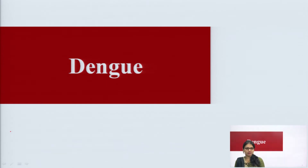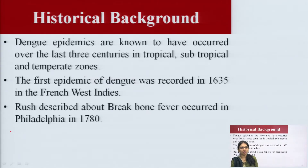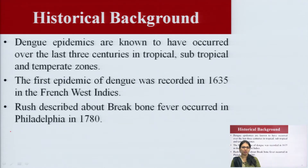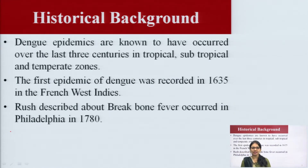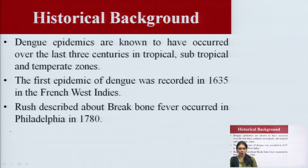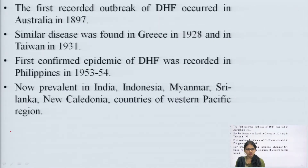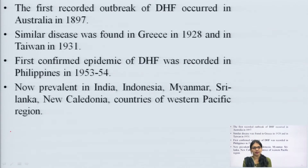The next topic is Dengue. Dengue epidemics are known to have occurred over the last three centuries in tropical, subtropical, and temperate zones. The first epidemic of Dengue was recorded in 1635 in the French West Indies. Rush described a 'break bone fever' outbreak in Philadelphia in 1718. The first recorded outbreak of Dengue occurred in Australia in 1897.